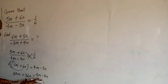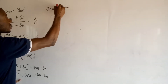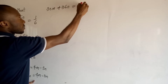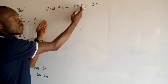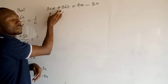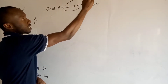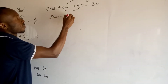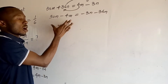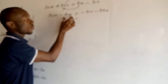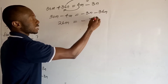So I have 30m + 36n = 4m − 3n. I want to separate the m terms and the n terms — taking the m's to one side and the n's to the other side. So I will take 4m over to the left and 36n over to the right. I will have 30m minus 4m equal to minus 3n minus 36n. This is how we collect like terms. So 30m minus 4m gives me 26m, equal to minus 3n minus 36n, which gives me minus 39n.